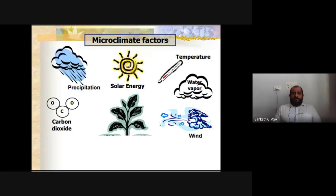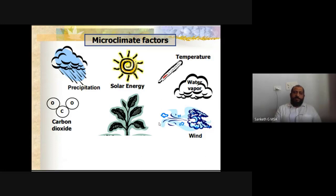The microclimate factors are almost the same as the climatic characteristics we studied: precipitation (that is rainfall), solar energy and temperature, carbon dioxide and various gases in the atmospheric condition, vegetation, and wind movement. The kind of wind movement or behavior of wind in a particular region defines its microclimate. These are the major microclimatic factors.